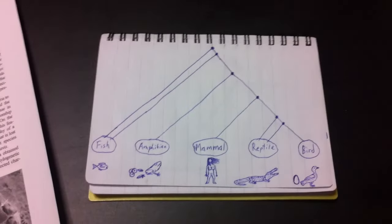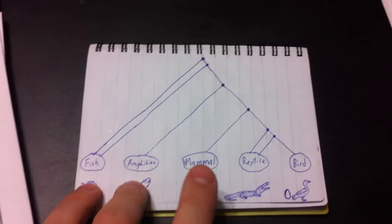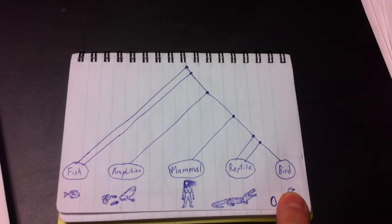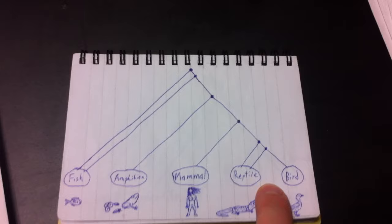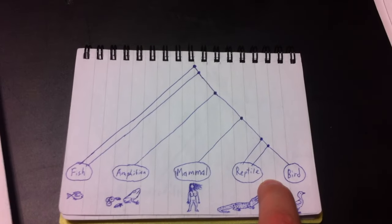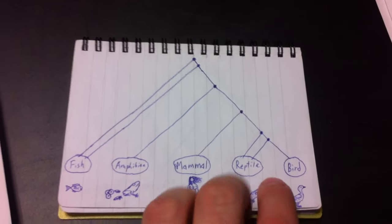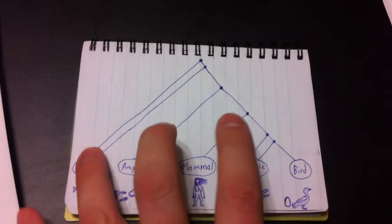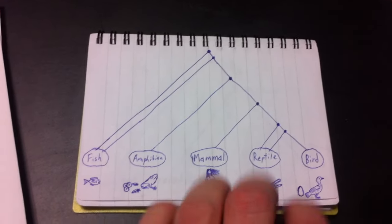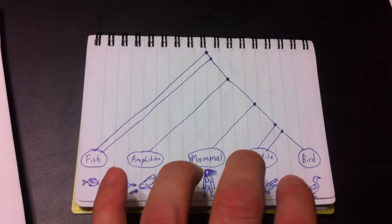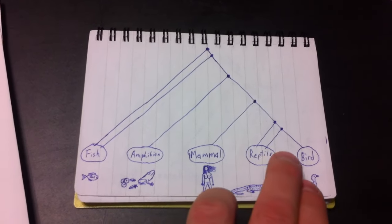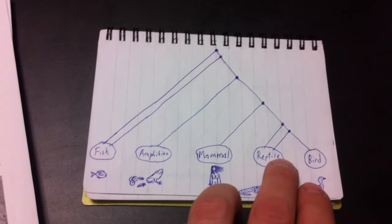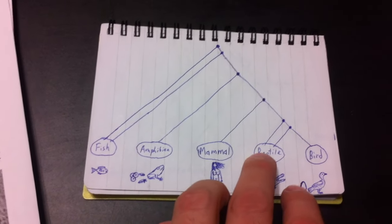Now, if Darwin's right, that means that the apparently distinct classes of animals today with no intermediates is just a product of extinction. And that if we could see everything that ever lived, the distinctions between these groups would no longer be distinct. And so if some of these groups contain members that are more closely related to a member of a different group than to other members of the same group, then that's when we're really going to run into a problem.